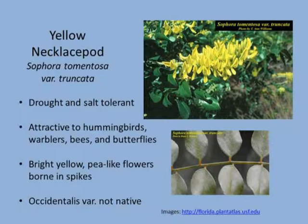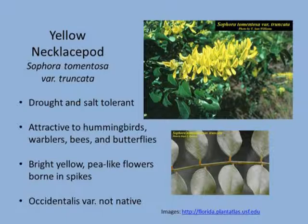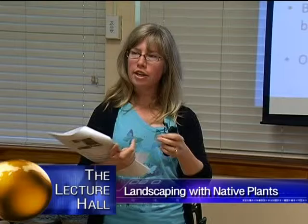Another one: the yellow necklace pod. This is a drought- and salt-tolerant plant. There are a couple of cultivars — one has smoother green leaves, another has almost silvery, very hairy leaves. The flowers are attractive to hummingbirds, warblers, bees, and butterflies. Once the flowers are done, it creates seed pods that look like necklaces, which is unique. You'd want to keep those pruned off, but that's generally the only maintenance it needs. Also be aware there is a variety, Occidentalis, that's not native, so if you're looking for yellow necklace pod, be sure to ask at the nursery where you're purchasing it.